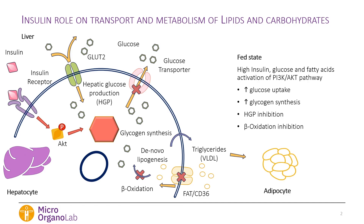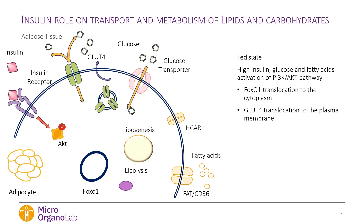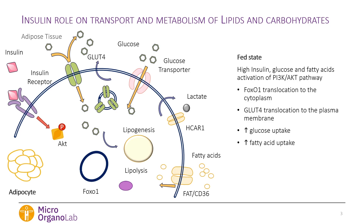This ultimately leads to triglyceride secretion through VLDL, which would then be uptaken by the adipocyte. In the adipocyte, the same pathway is activated, and the downstream signaling shows translocation of the FOXO1 transcription factor from the nuclei to the cytoplasm. Intracellular vesicles containing glucose transporters merge with the cellular membrane to increase glucose uptake capacity, leading to lipogenesis, uptake of fatty acids, lactate secretion, and lipolysis inhibition.